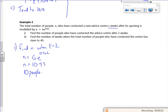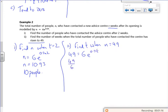Part 2 says find the number of weeks when the total number of people who have been contacted has risen to 49. I want to find T when M is 49. So 49 = 6e^(0.3T). We'll do some rearranging. So 49/6 = e^(0.3T). We all love logs. So ln(49/6) = 0.3T.